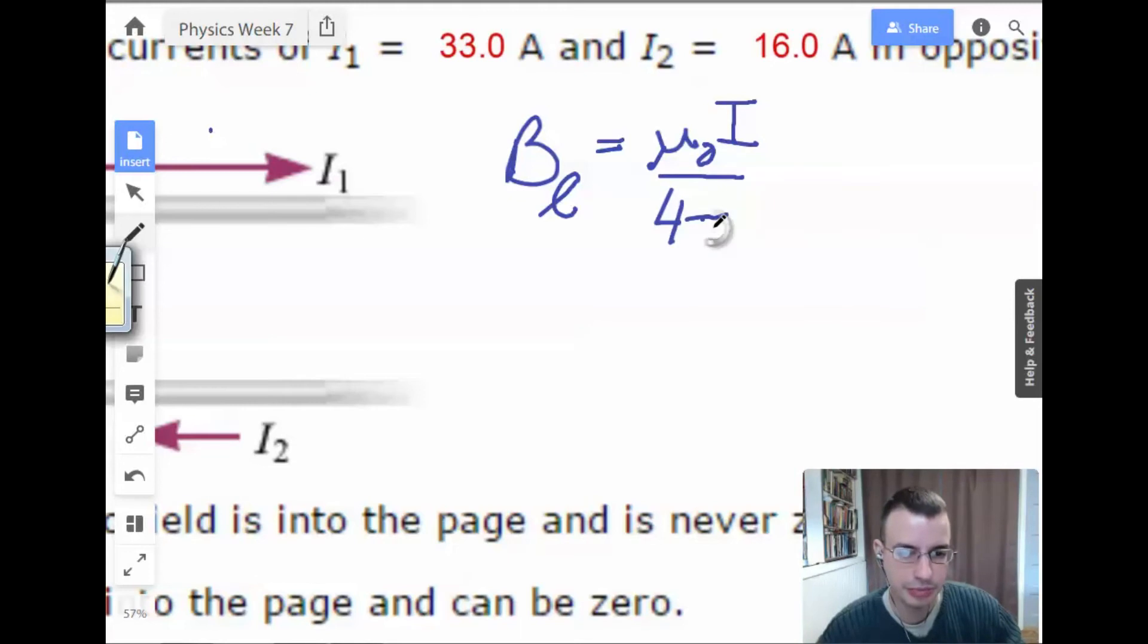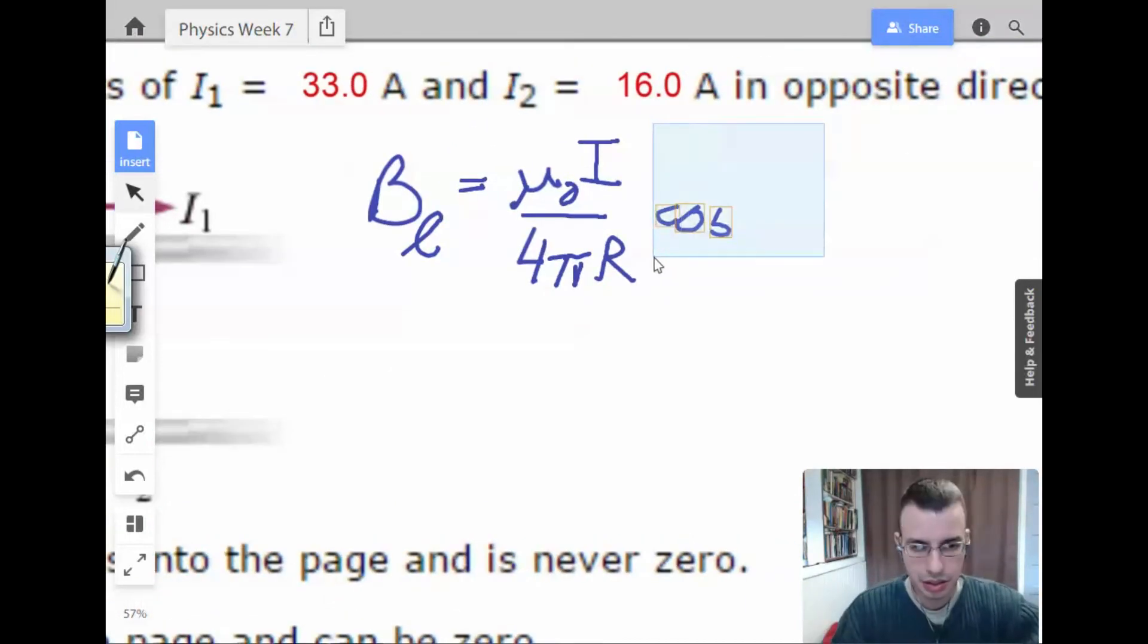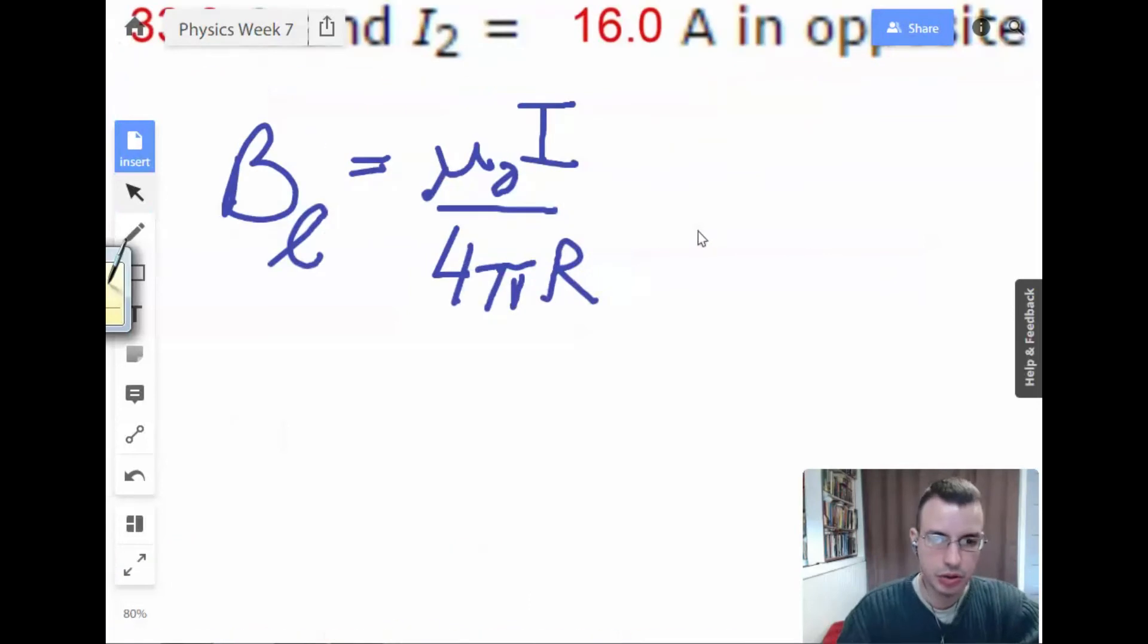And we're going to have mu naught I over four pi R.